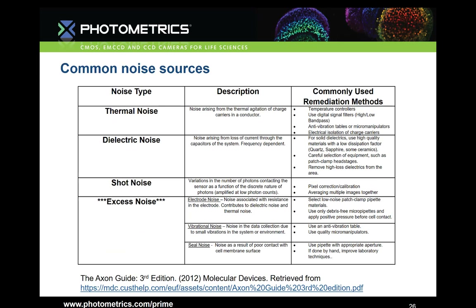Noise falls into four main categories: thermal, dielectric, shot noise, and excess noise. Thermal noise, dielectric noise, and shot noise can mostly be eliminated with the selection of quality materials. However, excess noise is the area most electrophysiologists will stress about, because there are a few different types of noise within that umbrella category. Electrode noise can be remediated by selecting low-noise patch clamp pipettes and always making sure your pipette is debris-free. Improved techniques for patch clamping can go a long way in reducing electrode noise.